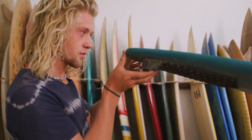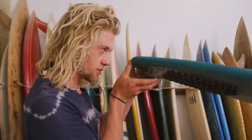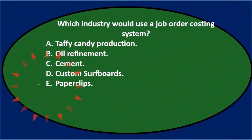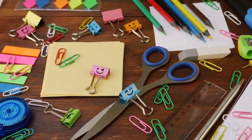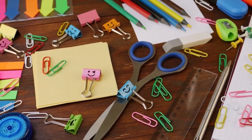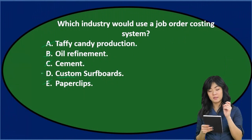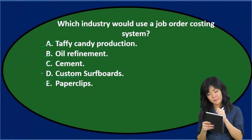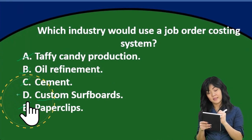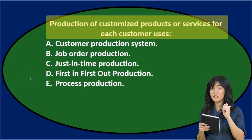Anything that says 'custom' is pretty much probably going to be a job cost system. So custom surfboards is a job cost. Option E says paper clips — I would assume all paper clips are made systematically, they all want to be the same type of paper clip, and therefore would use a process cost rather than a job cost. That leaves us with the final answer: the industry that would use a job order costing system is D, custom surfboards.